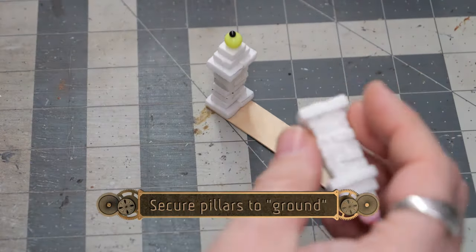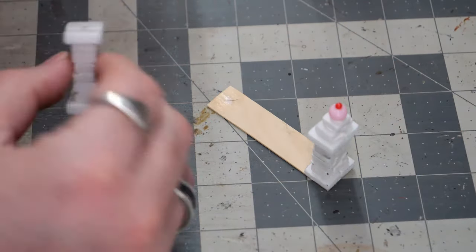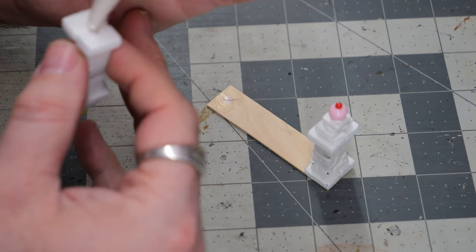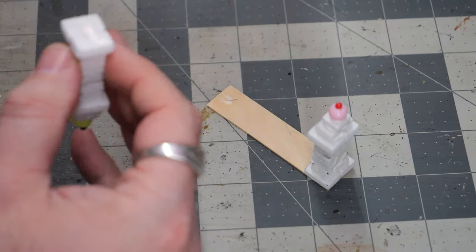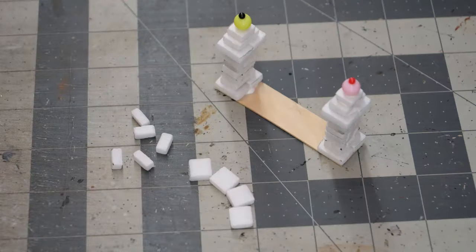After making a second column, I'm going to secure them to the ground—I'll call this a ground plate. Securing them with more wood glue, then setting aside to dry while we get everything ready for the next section.